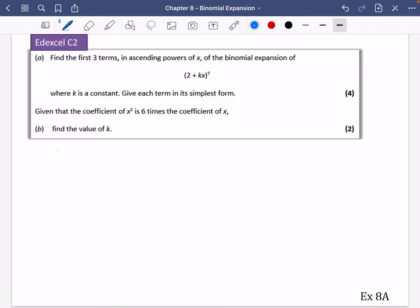OK, so the first part says find the first three terms. It doesn't want all of them. It wants it in ascending powers of x of this thing that we've got here. And it says that k is a constant. Give each term in its simplest form. So we have to think of the binomial because we need to go all the way down to the seventh row. Well, I could start off by doing my 1, 1, 1, blah, blah, blah. But just try and go with the row that you know furthest down.